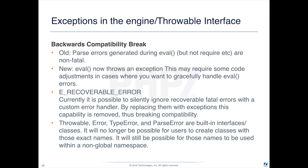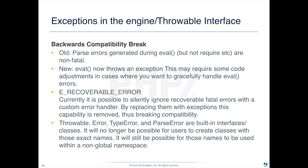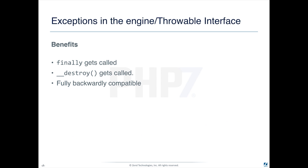You need to be aware of that and handle it. Throwable, Error, TypeError, and ParseError are built-in interfaces and classes. It will no longer be possible to use classes with those exact names. If you've got a good set of unit tests and you're using Travis CI or shippable.com or something to continuously build your application, adding PHP 7 in and running your tests will show that up pretty quickly. But if you don't have unit tests, you'll want to grep through your code for those names and make sure you're not using them, because those will now break your code in PHP 7.